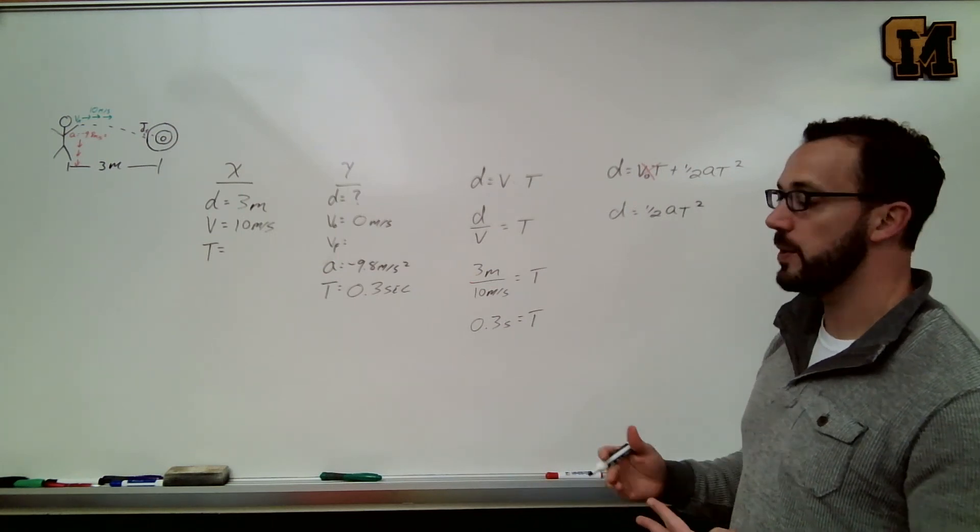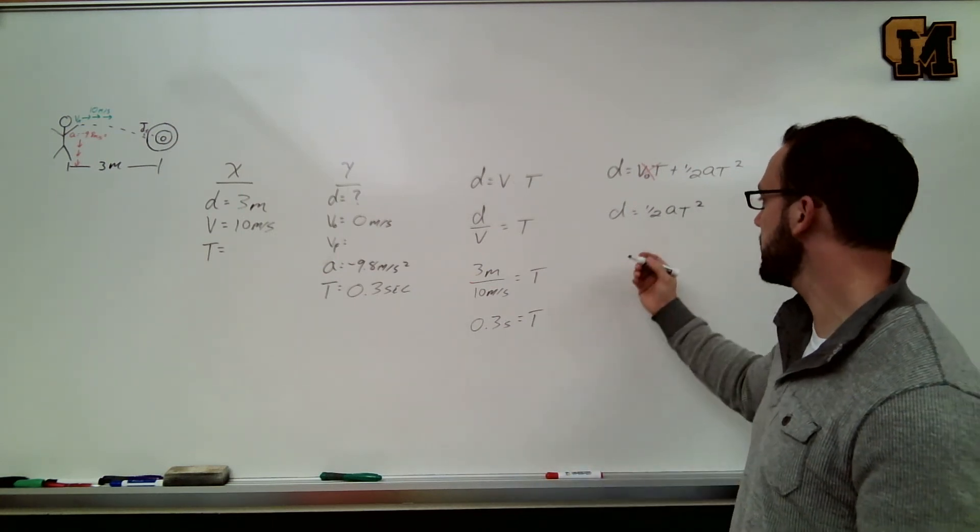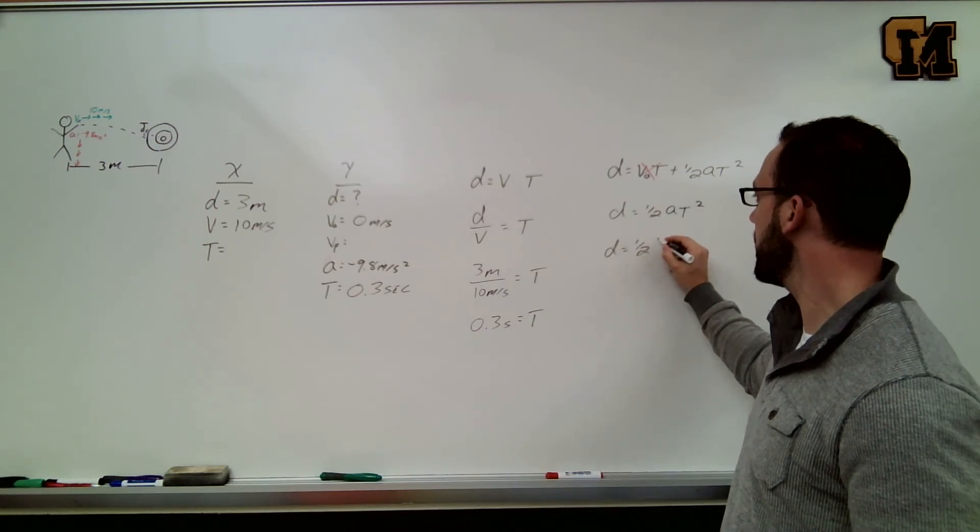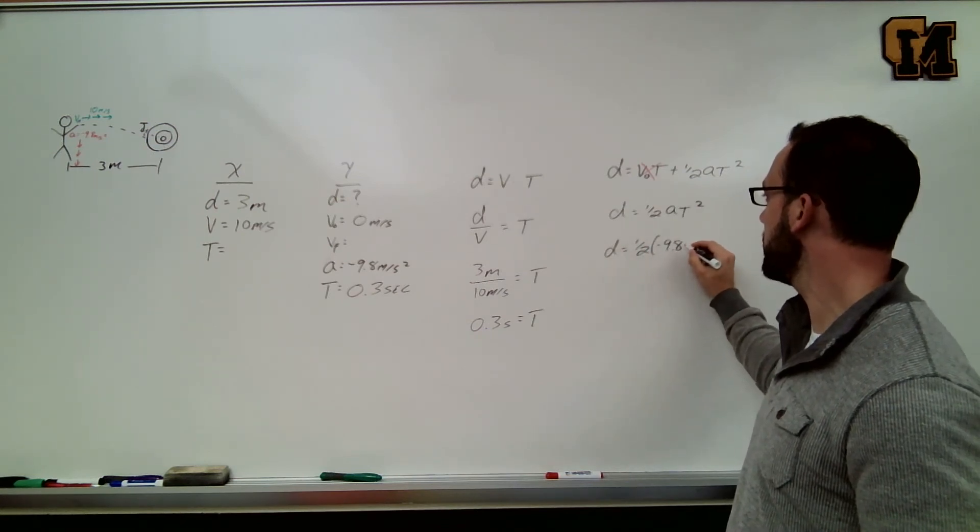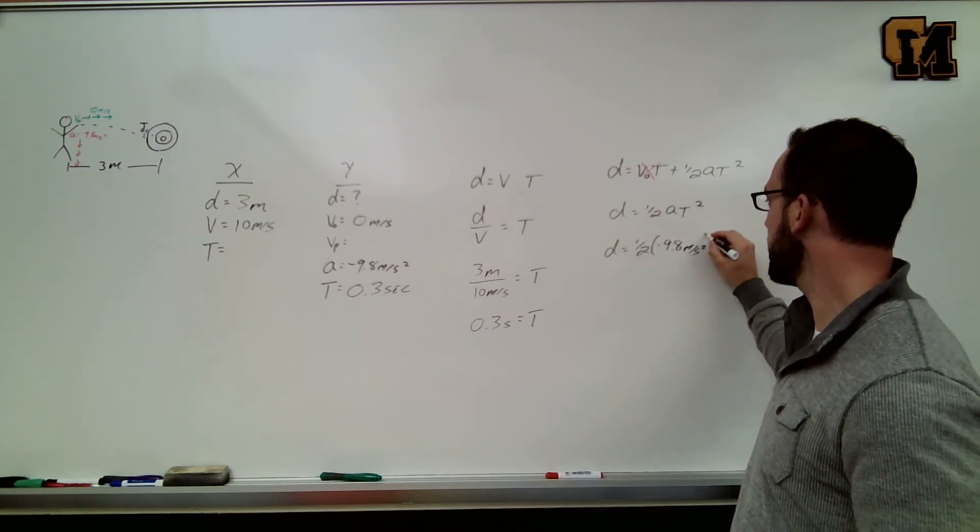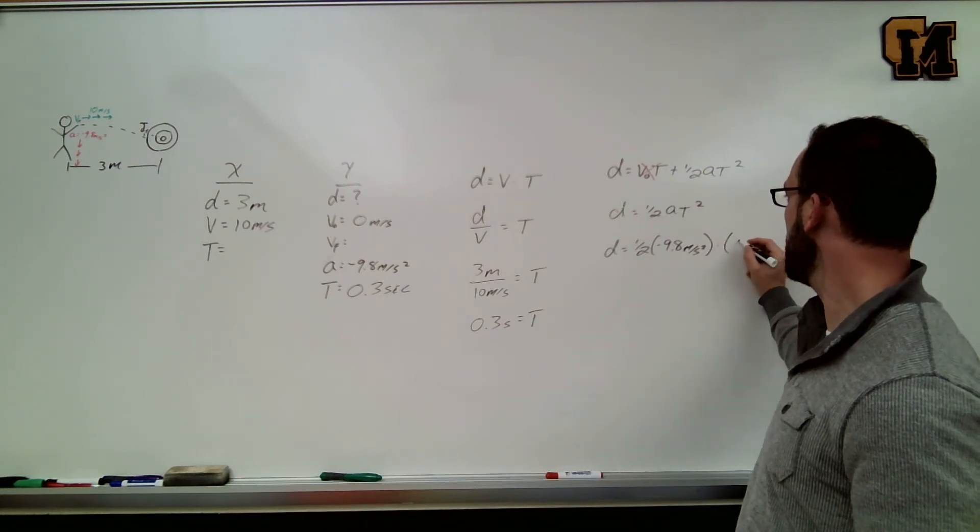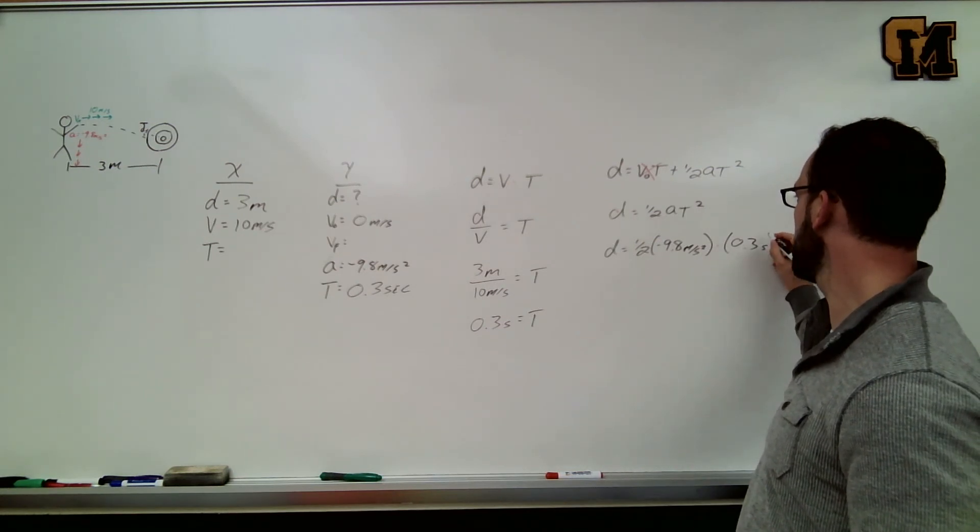I don't have to do any rearranging. It's already set up for d. I just have to plug in my numbers. D equals 1 half times negative 9.8 meters per second squared times t, which is 0.3 seconds, and that number gets squared.